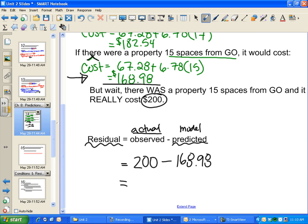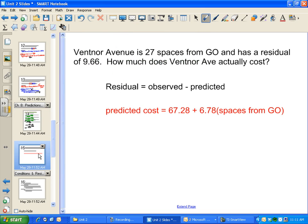So I end up with a residual—I call it resid for short. Subtracting, I got $31.02. There was a $31 difference between what actually happened and what I predicted. That's okay—remember, my model is not perfect.